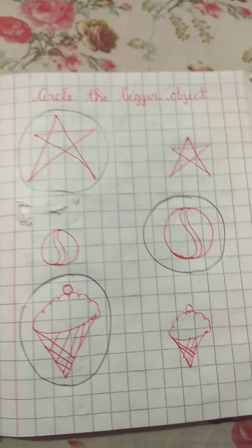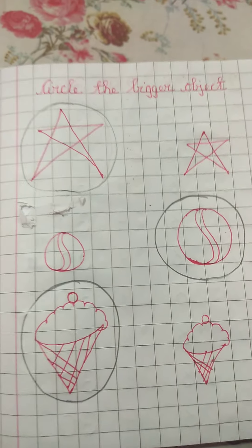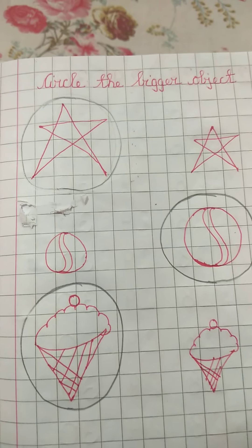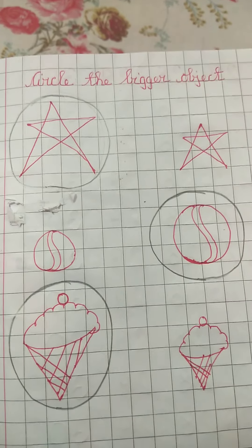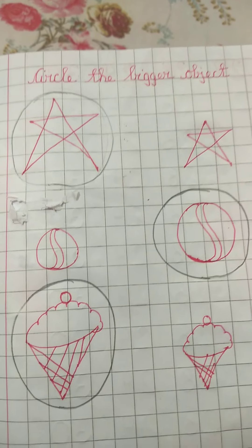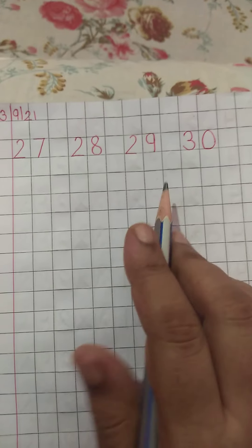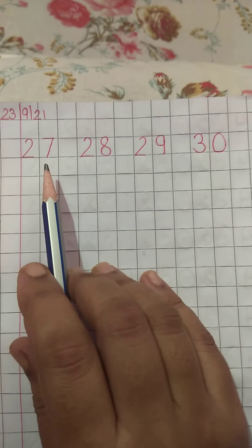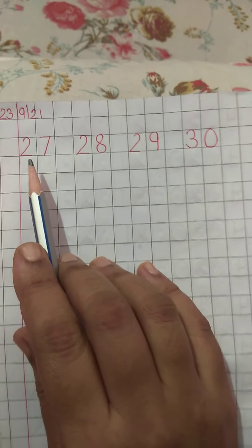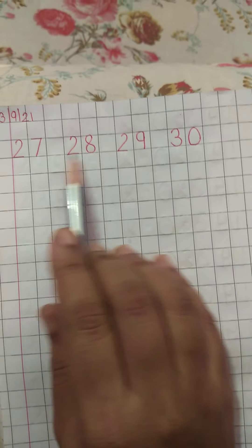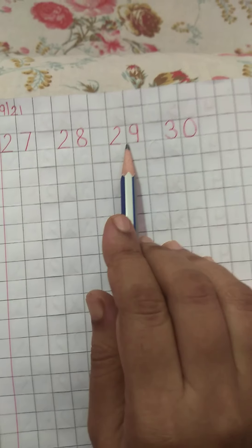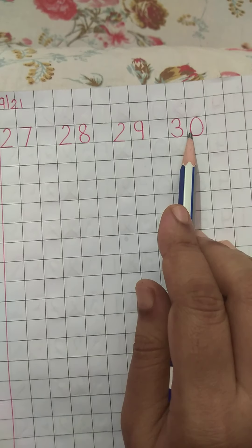I hope you all understood today's concept, that is big and small. Now you have to take the next page. Here you will write numbers 27, 28, 29, and 30.